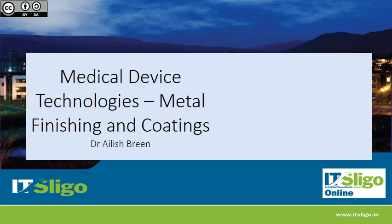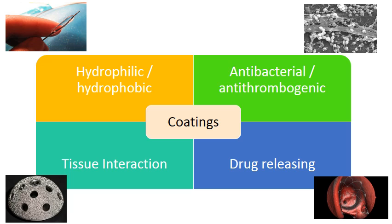In this last section on coatings, I'm going to talk about the other types of coatings that weren't covered in the first section — tissue interaction coatings mainly, and antibacterial and antithrombotic coatings. We covered hydrophilic, hydrophobic, and drug-releasing coatings in the last video, so I'm going to focus on antibacterial and tissue interaction coatings now.